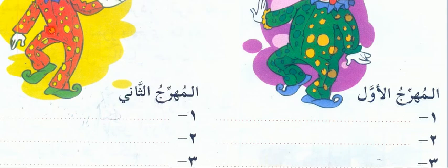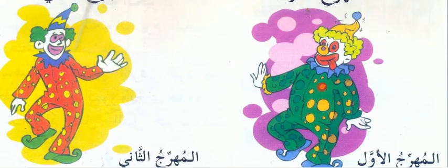You have to write the differences between the two clowns. For example, 'malabisu' — their clothes — one is red, another color for the hat. One is fat, one is thin. You can write about the cap, lips, mouth, tongue, eyes ('uyoon'), nose, and ears. All these words you already know, so write whatever differences you see.